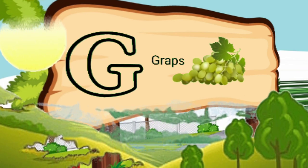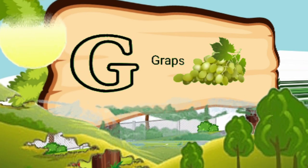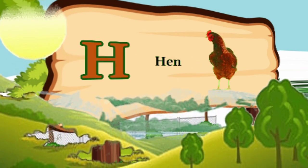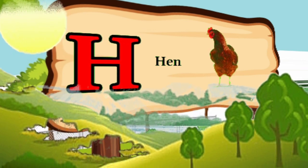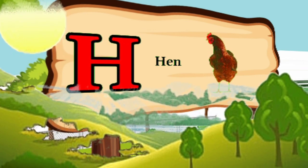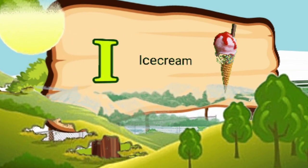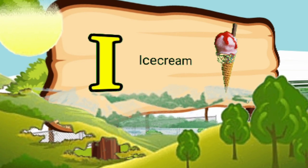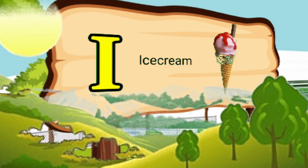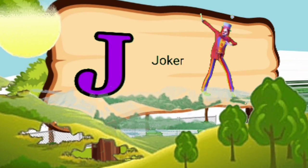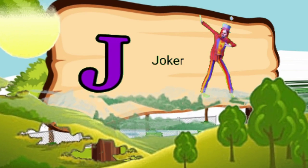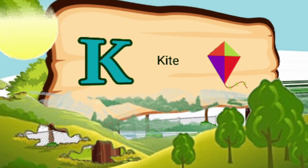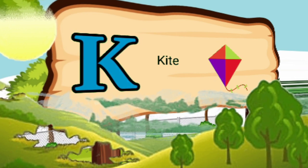F for peas. G for grape. I for ice cream. J for joker.